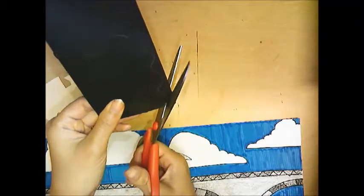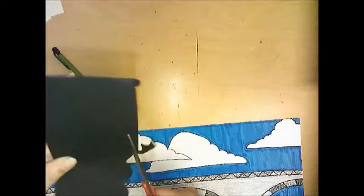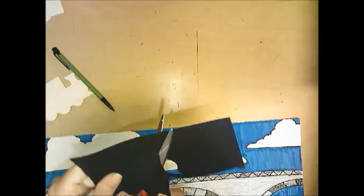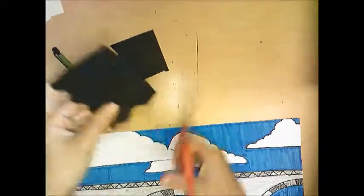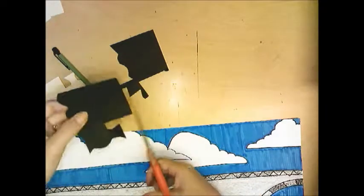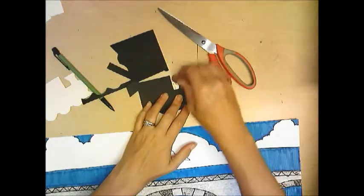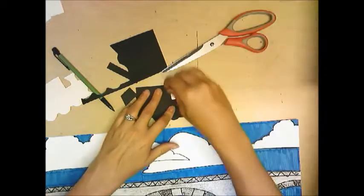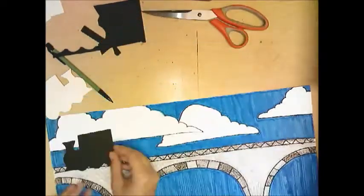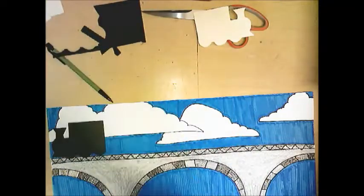Now I'll take my scissors and begin cutting it out. This is a tricky cut — there are a lot of parts to this train, so remember to turn your paper and not your scissors. If you need to cut a piece off, cut it off and then go back in. If you can still see pencil marks, erase them, or you can flip it over and have your train go the other direction. You pick which direction you want your train to go.